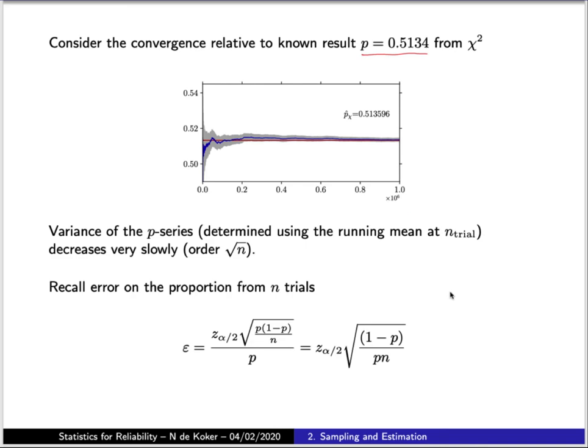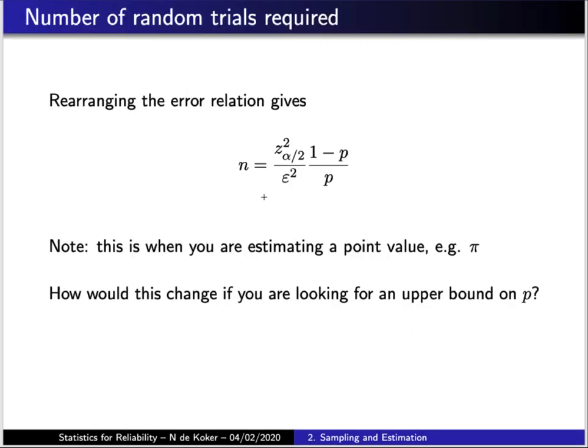Now, you'll recall from the previous lectures that the width of an interval on an estimate for a proportion is given by this expression. By rearranging this expression we can determine the number of random samples that we need to take to get a desired accuracy reflected at some desired level of confidence.